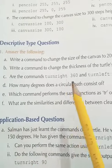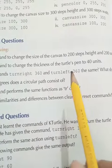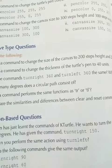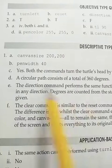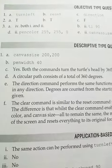Part B. Write a command to change the thickness of the turtle span to 40 units. So you will write pen width space 40.